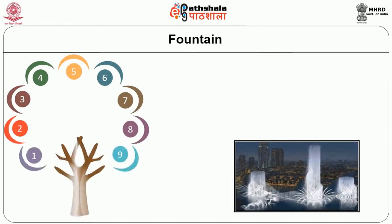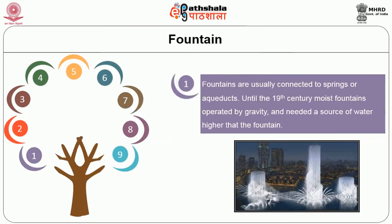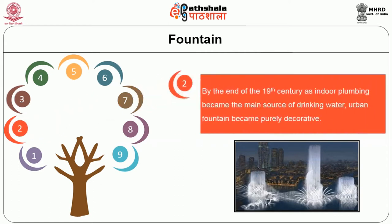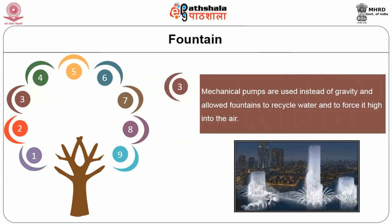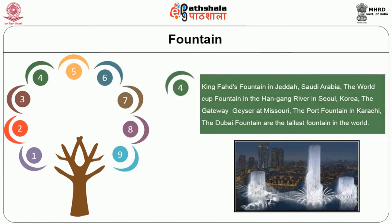The next construction space element is fountain. Fountains are usually connected to springs and aquatics. Until the 19th century, most fountains operated by gravity and needed a source of water higher than the fountain. By the end of the 19th century, as indoor plumbing became the main source of drinking water, urban fountains became purely decorative. Mechanical pumps are used instead of gravity, allowing fountains to recycle water and force it higher into the air. The King Fahd Fountain in Jeddah, Saudi Arabia; the Cheonggyecheon Stream Fountain in Seoul; the Gateway Geyser in Missouri; the 4th Fountain in Karachi; and the Dubai Fountain are among the tallest fountains in the world.